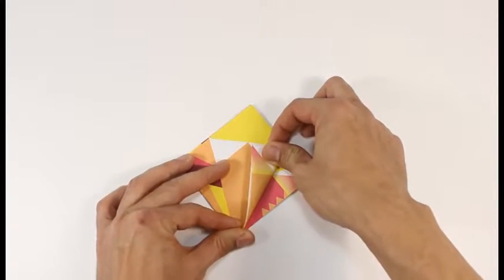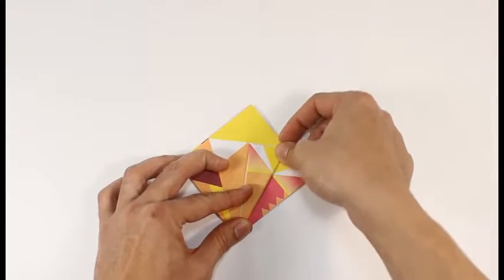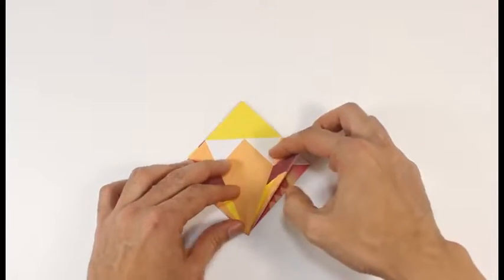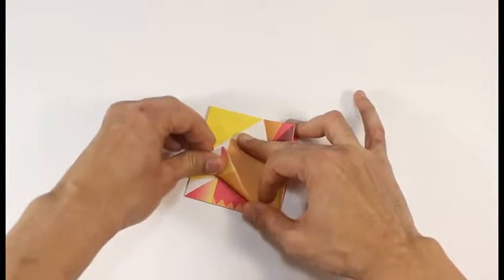Now the bottom open edge, we're going to fold up diagonally to the center line. Repeat on the other side.